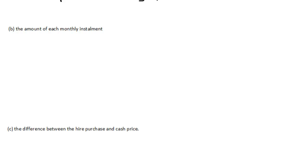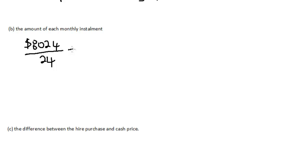Part B asks us to find the amount of each monthly installment. To find this, we recall the amount required to be repaid over the 24-month period, which is $8,024. We divide this by 24 months. So each monthly installment is equal to $8,024 divided by 24.